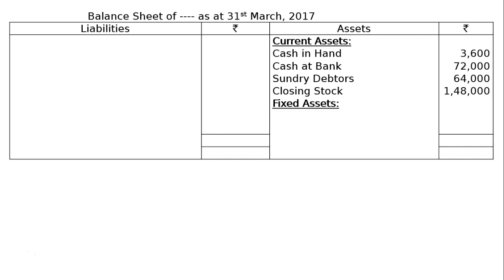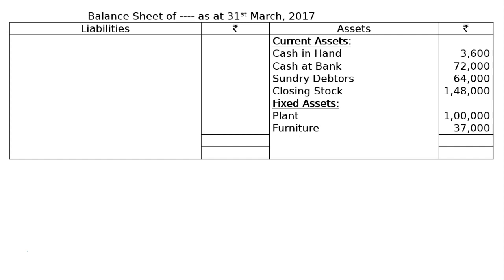Next under fixed assets, we have plant at rupees 1,00,000 and furniture at rupees 37,000. The total of the asset side comes to rupees 4,24,600.